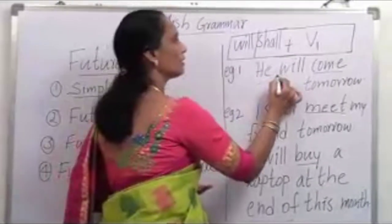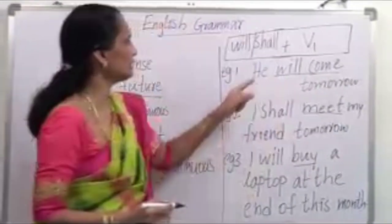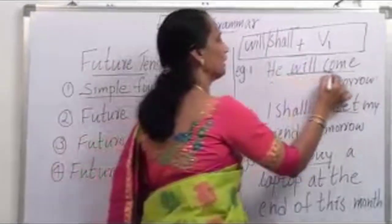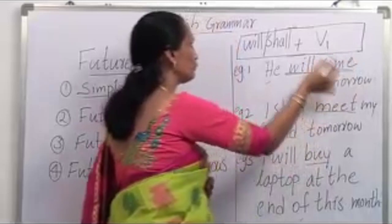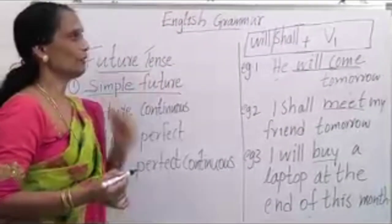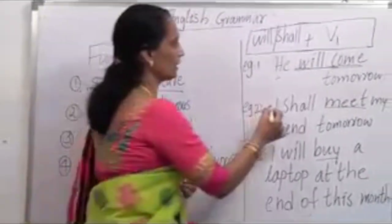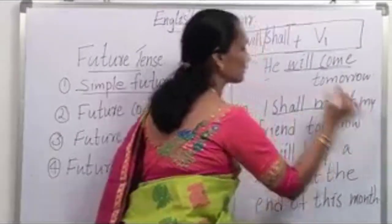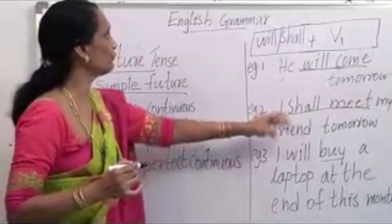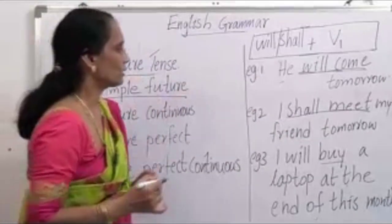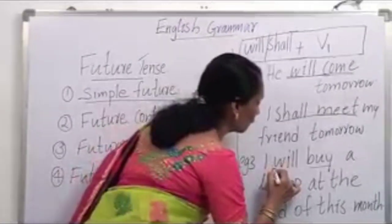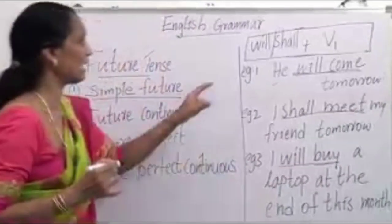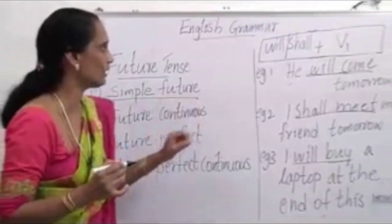The first example is: 'He will come tomorrow' — here 'will come' is the verb format for simple future. Second example: 'I shall meet my friend' — 'shall meet' is the verb format for simple future. Third example: 'I will buy' — let us analyze these cases.